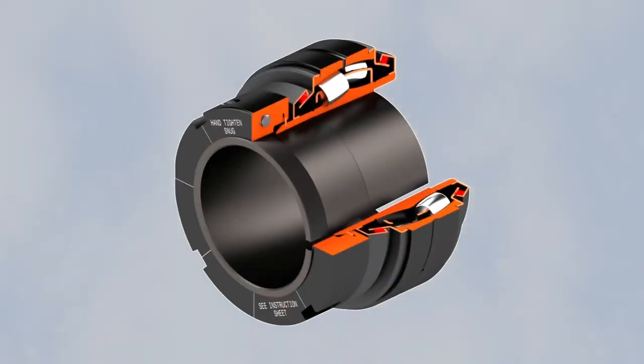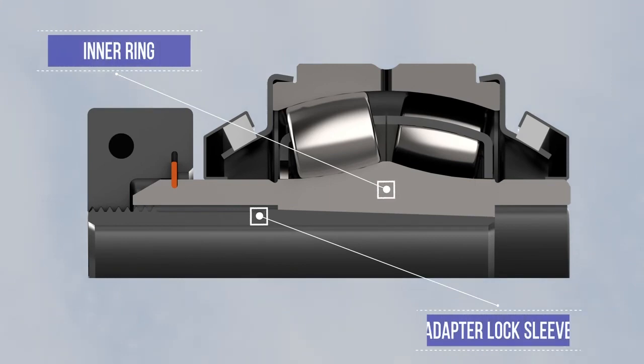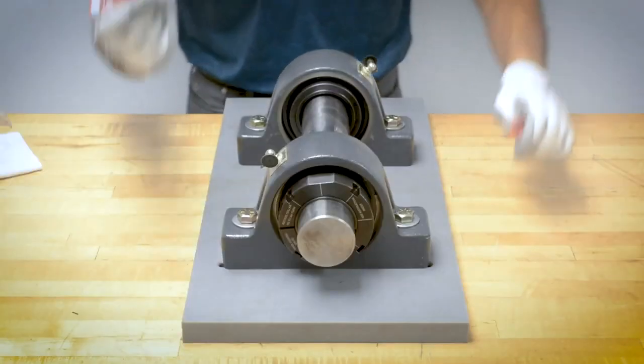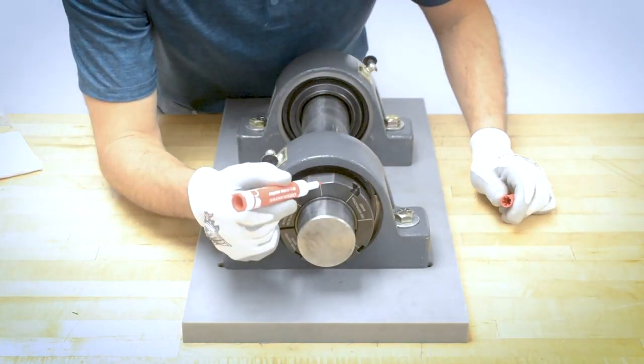At this point, clearance has been removed between the adapter lock sleeve and the shaft. Mark a line across the collar nut and shaft with a marker.